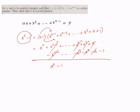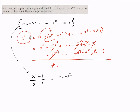Let's rewrite the expression using this factorization. We know that (x^n - 1) / (x - 1) equals 1 + x + x² + ... + x^(n-1), which is the prime p. This means x^n - 1 = p · (x - 1).